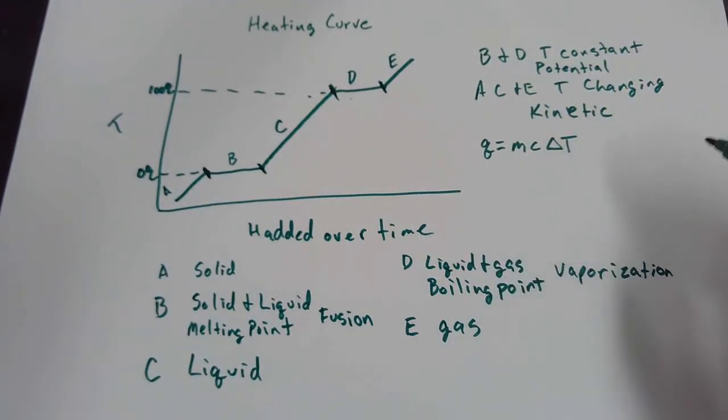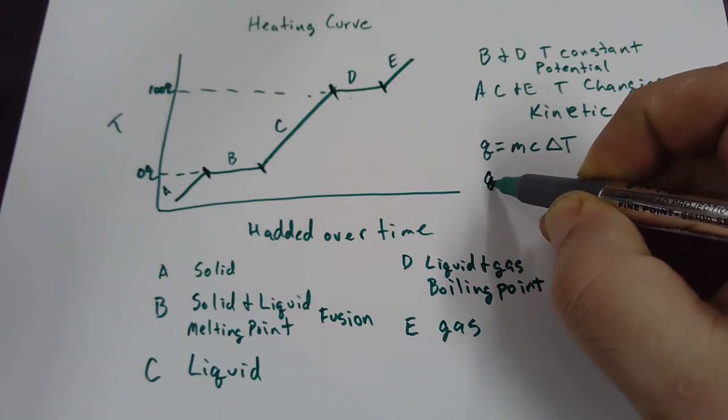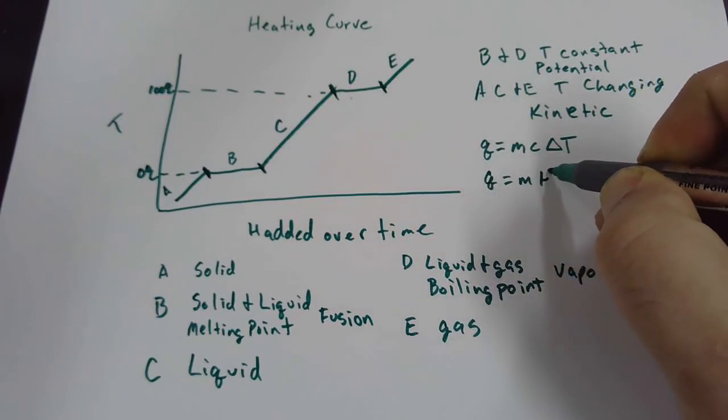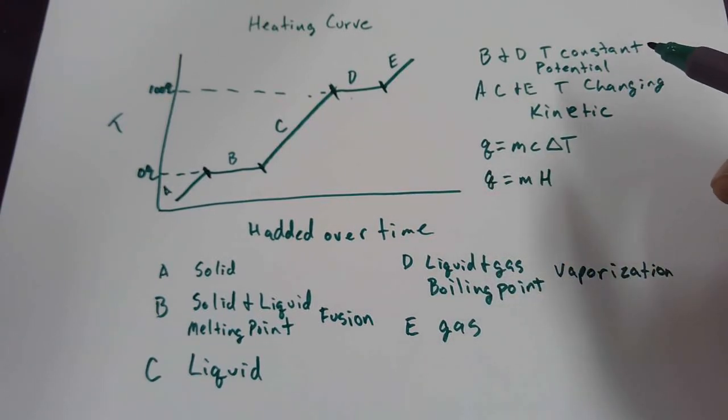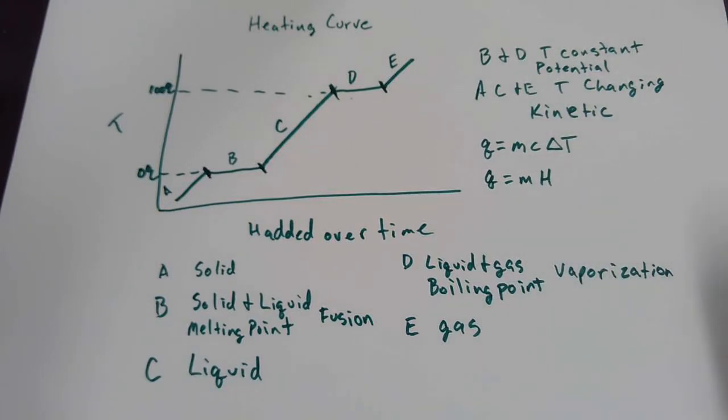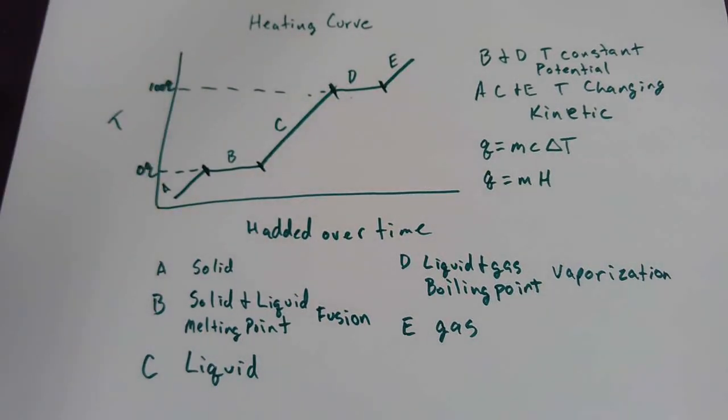So what equation do I use for segments B and E then? I use q is equal to m h. Everybody cool with this? Q equals m h. Alright, so I'm going to stop this recording now and I will come back on another recording and show you what all of those variables mean and we're going to break down the equations.